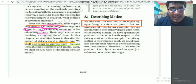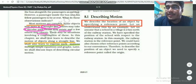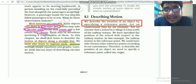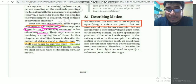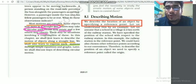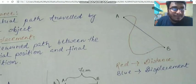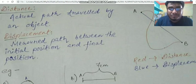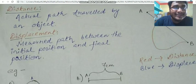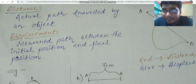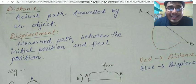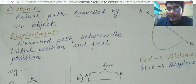Describing motion: we describe the location of an object by specifying a reference point. We describe the motion by describing the distance. Distance is the actual path travelled by an object.